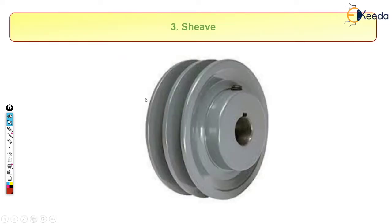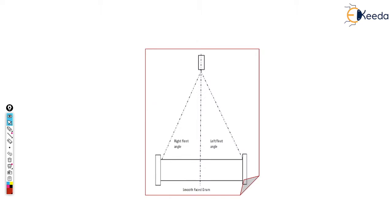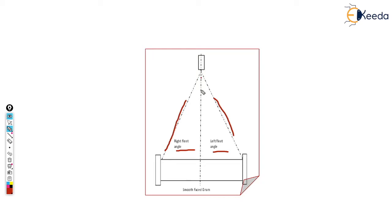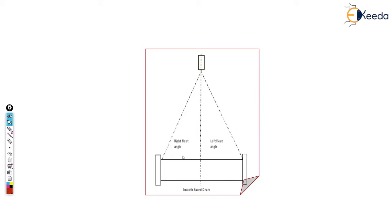This is the general diagram of a pulley — how a pulley or sheave looks. There is an important term called the fleet angle. For the drum and compensating pulley, when the rope is attached it creates some angle; if we draw a perpendicular from the rope's path, the angle formed is called the fleet angle. Generally, the fleet angle should not be greater than 5 degrees — if it is less than 5 degrees it is safe. We will discuss this in detail during numerical problems.